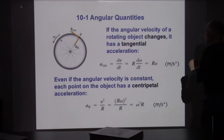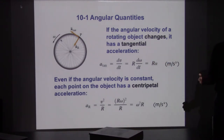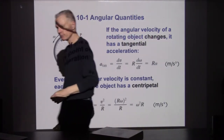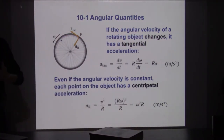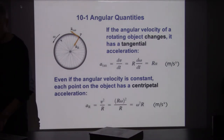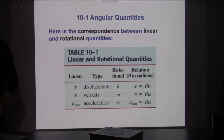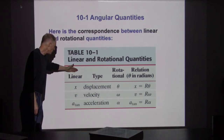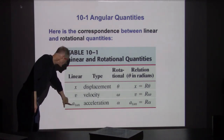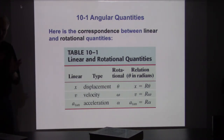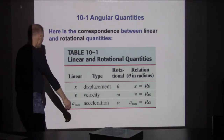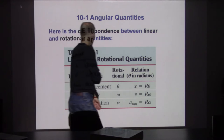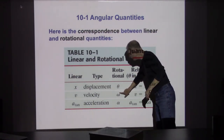These are classified as linear accelerations with units of meters per second squared — both components. Here's a nice comparison table. Back in linear motion we had x, v, and tangential acceleration along a path. The rotational analogs are θ, ω, and α. The connection: x = Rθ, v = Rω, a_tangential = Rα. We haven't brought in radial acceleration yet — that comes from the circular motion aspect. So that's the full comparison between linear and rotational quantities.